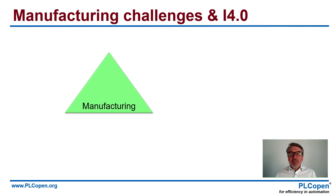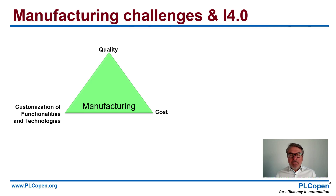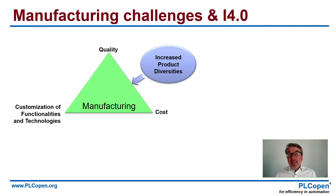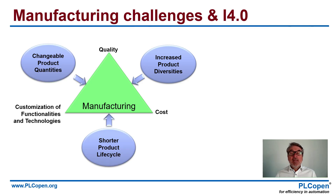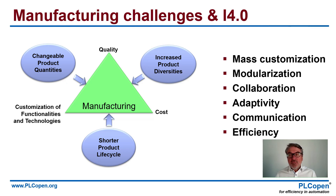If we talk about Industry 4.0, we look to manufacturing. And manufacturing has three main items: quality, cost, and customization. And between those three challenges, we have increased product diversities, shorter product life cycle, and changeable product quantities. So the key word in Industry 4.0 is mass customization, and we do that via modularization, collaboration, and adaptivity.